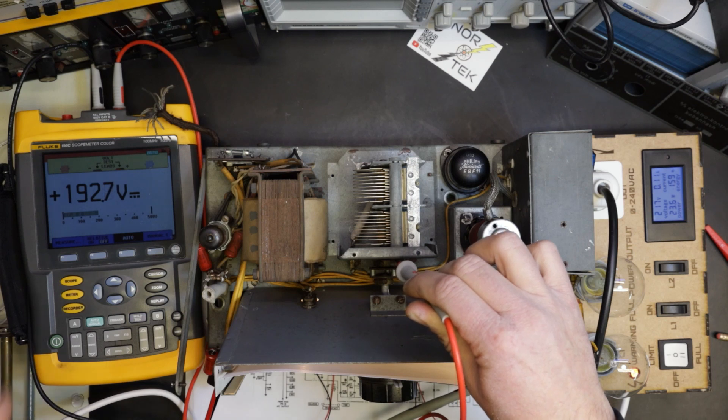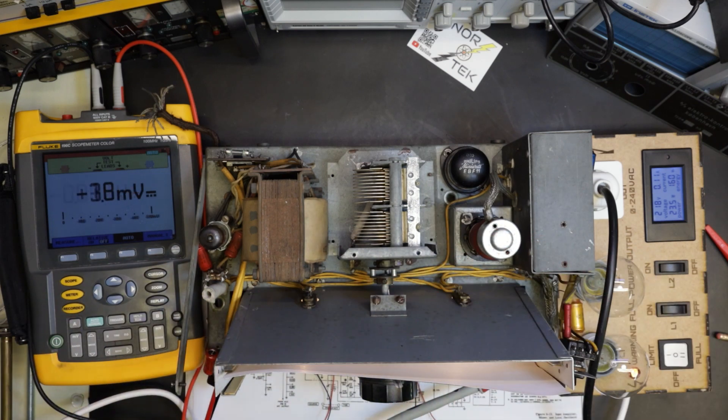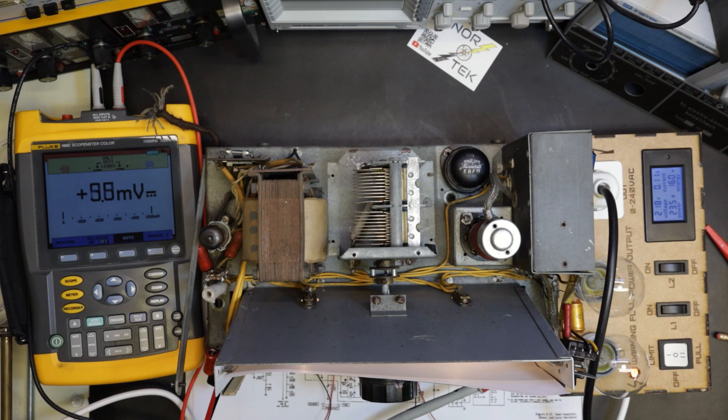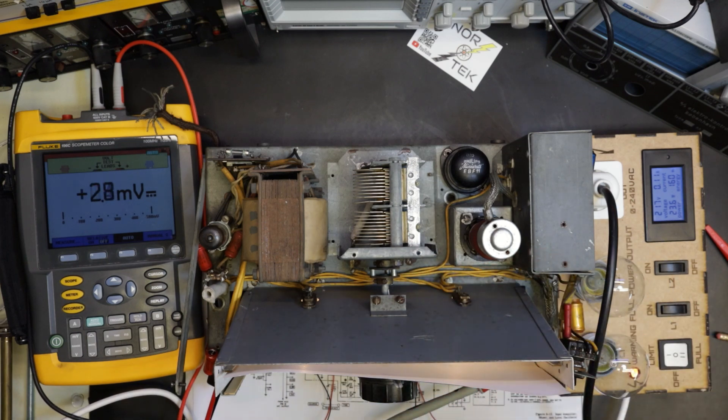So something is most likely leaking inside the unit. Even if you have the dim bulb tester, you're not 100% safe. You have to know what you're dealing with and take your precautions so you don't